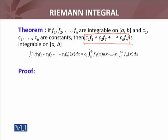ये जो चीज़ लिखी हुई है—c1f1 plus c2f2 plus and so on, up to cnfn—is integrable. This function is integrable, the first thing. And furthermore, its integral equals this one. अब इसको proof किस तरह करना है?